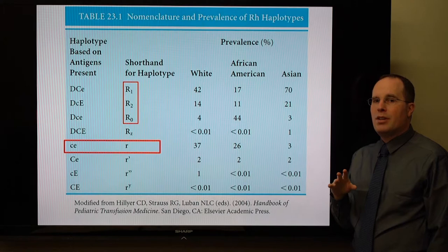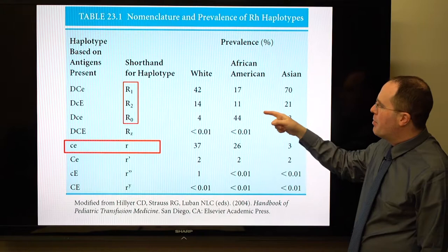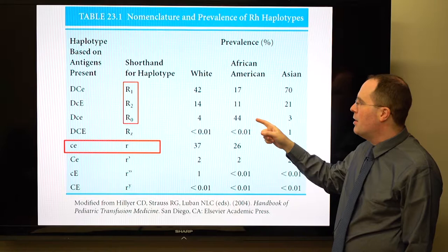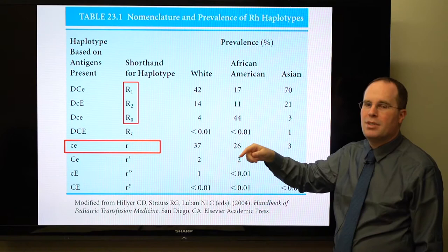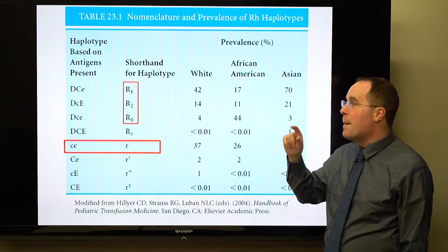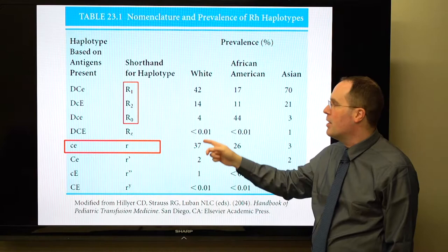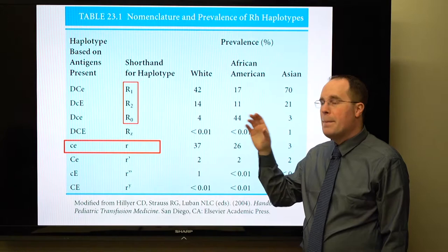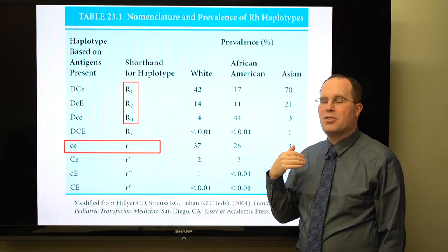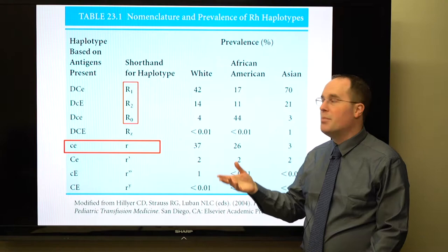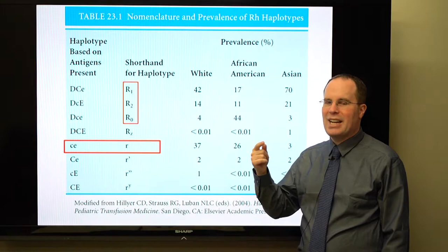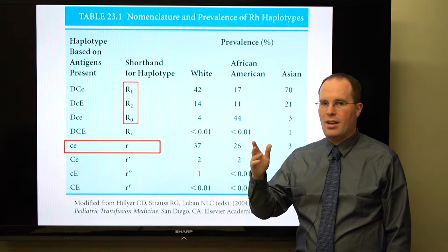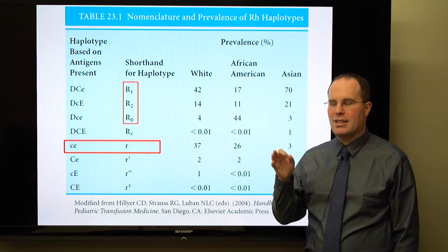In the Black population, R0 is the most common haplotype, meaning little c and little e antigens are more prevalent there, while big C and big E antigens are more common in the white population. This is clinically important: sickle cell patients (predominantly Black) who are negative for big C and big E antigens commonly receive transfusions from a donor pool that is predominantly white and positive for those antigens, leading to formation of anti-big C and anti-big E antibodies in sickle cell patients.